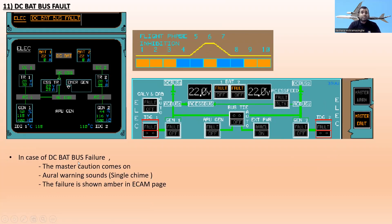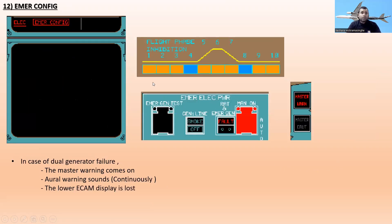The next one is DC bat bus fault. In case of DC bat bus failure, master caution comes on with a single chime oral warning, and the failure is shown amber on the ECAM page — DC bat bus fault. When the DC bat bus fails, battery one and battery two also show fault. You can see the fault messages appear, and the BAT 1 and BAT 2 fault lights come on in the control panel.